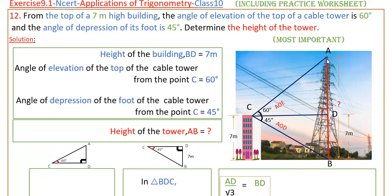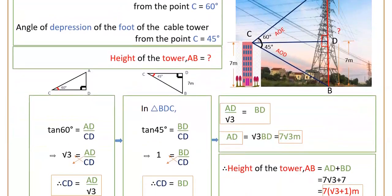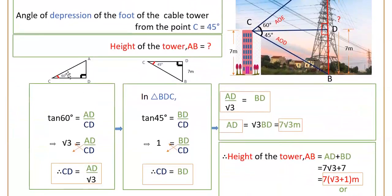First, take triangle ADC. In this triangle, the angle at C is 60 degrees. So tan 60 equals AD divided by CD. Tan 60 is root 3, so root 3 equals AD by CD. Therefore, CD equals AD divided by root 3.